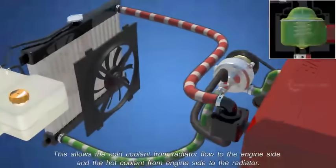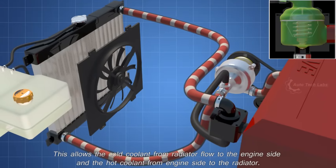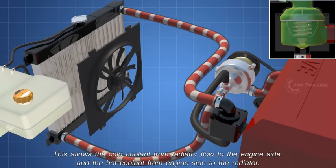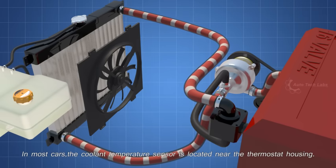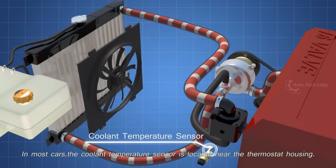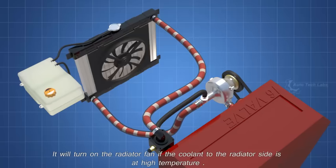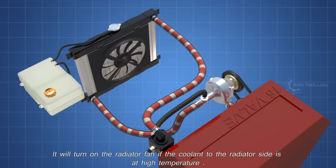This allows the cold coolant from radiator flow to the engine side, and the hot coolant from engine side flow to the radiator. In most cars, the coolant temperature sensor is located near the thermostat housing. It will turn on the radiator fan if the coolant to the radiator side is at high temperature.